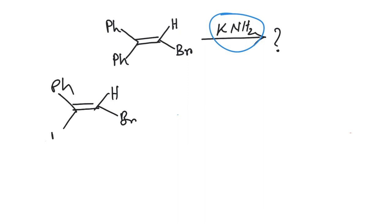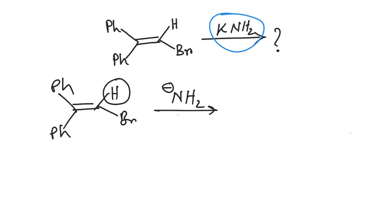We are given this substituted alkyl compound treated with KNH₂, meaning NH₂⁻, which is quite a strong base. What NH₂⁻ will do here is take this proton, which is quite acidic because it is attached to sp2 hybridized carbon atoms.